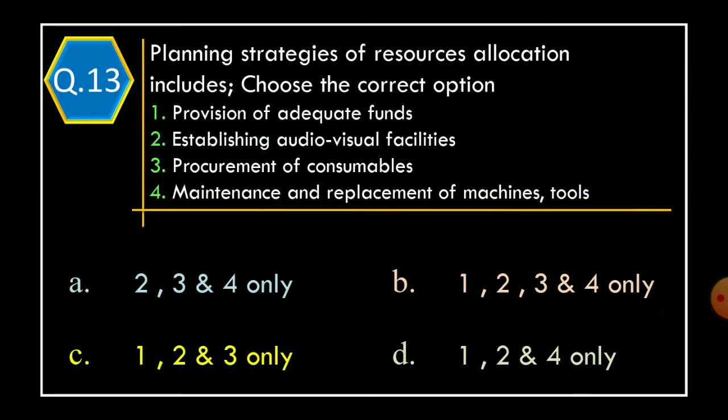Question 13: Planning strategies of resource allocation include — Statement 1: provision of adequate funds; Statement 2: establishing audiovisual facilities; Statement 3: procurement of consumables; Statement 4: maintenance and replacement of machines and tools. Options: Option A: Statements 2, 3, and 4 only; Option B: Statements 1, 2, 3, and 4 only; Option C: Statements 1, 2, and 3 only; Option D: Statements 1, 2, and 4 only. The correct option is Option A: Statements 2, 3, and 4 only.